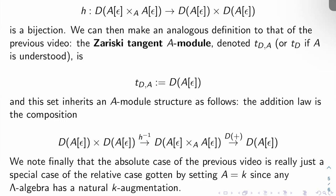We'll note finally that the absolute case of the previous video, the case k equals A, is really just a special case of the relative case here, gotten by setting A equals k, which might not surprise you, but there's a couple of things you have to check there. First of all, you have to make sure that any Λ-algebra has a natural k augmentation, but that's just obvious.